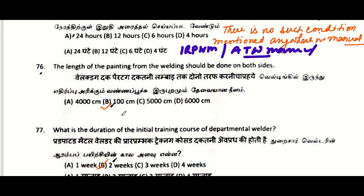The length of painting from the welding should be done on both sides — the options are not clear and the answer given is not right. It should be 100 mm on both sides.